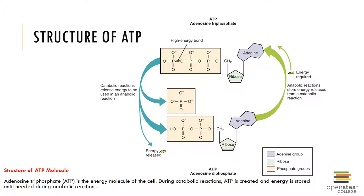During catabolic reactions of the mitochondria, about 40% of the energy is used for the production of ATP and cellular work. The other 60% escapes as heat that warms the interior of the cell and the surrounding tissues.